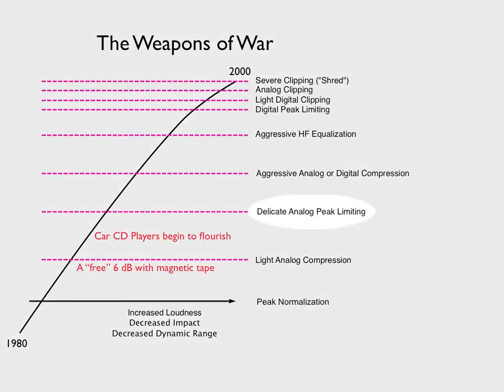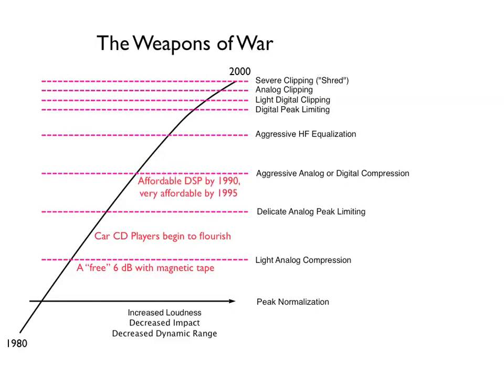Then we started to apply some delicate analog peak limiting, until the next accelerant came along. By the year 1990 we had some affordable DSP — for example the Harmonium Mundi processing — which was somewhat affordable by the large studios, and by 1995 very affordable DSP as our personal computers had greatly improved and DAWs were available as well. So the war went on and we started to apply aggressive analog or even digital compression, which was now affordable.